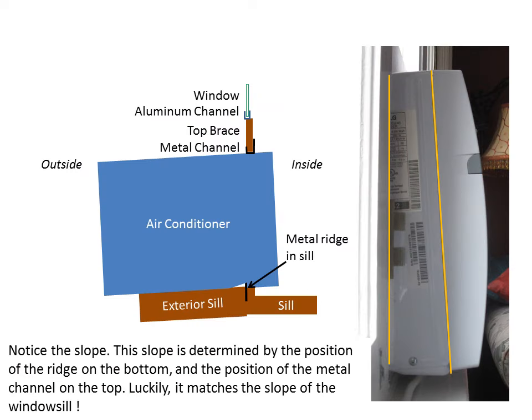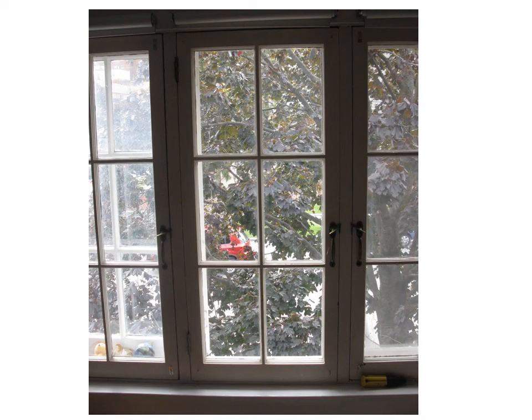The slope of the air conditioner is important — it has to slope so that condensate will drain out to the outside. The windowsill already has the right slope because it has to shed rainwater. The channel on the bottom and the metal channel on the top of the air conditioner are positioned to give it the right slope. It's fortunate that the slope on this windowsill matches up with the slope the air conditioner is expecting.